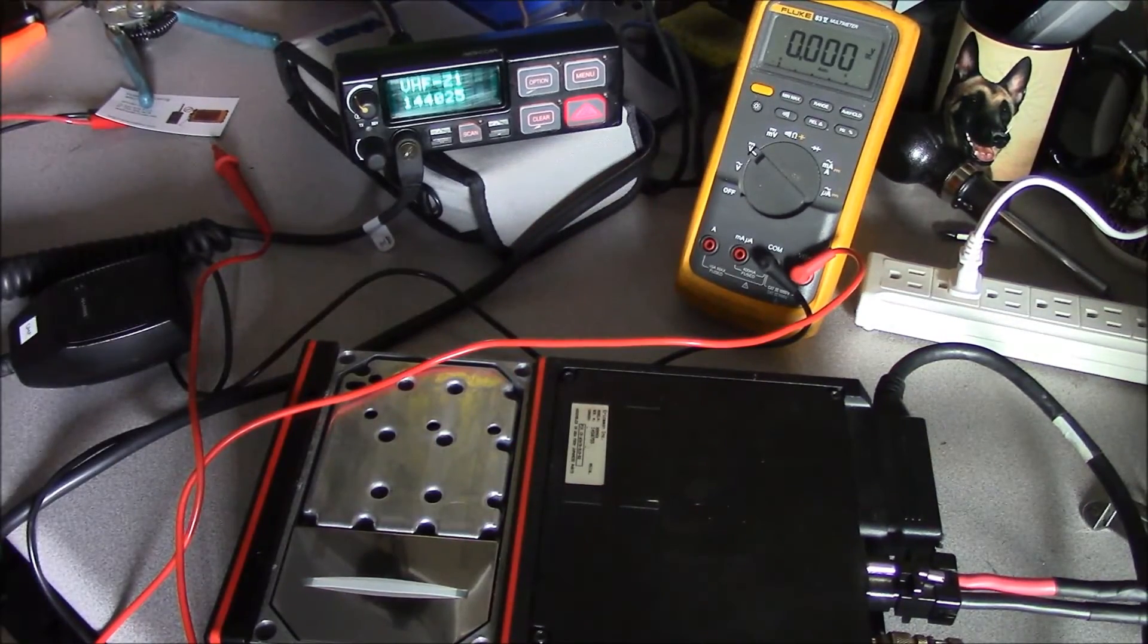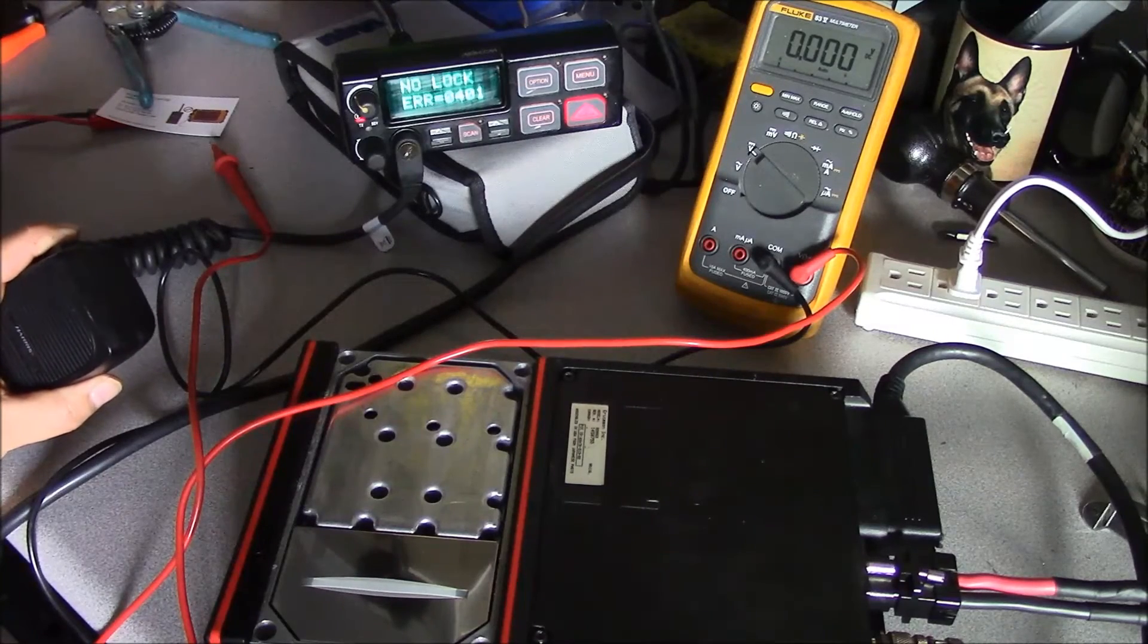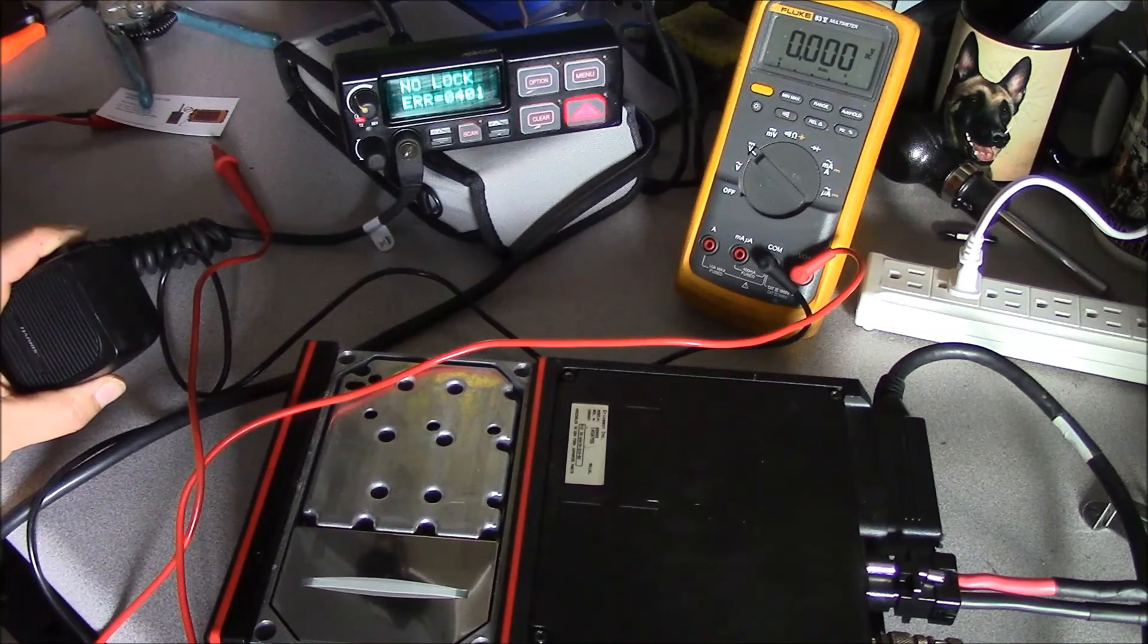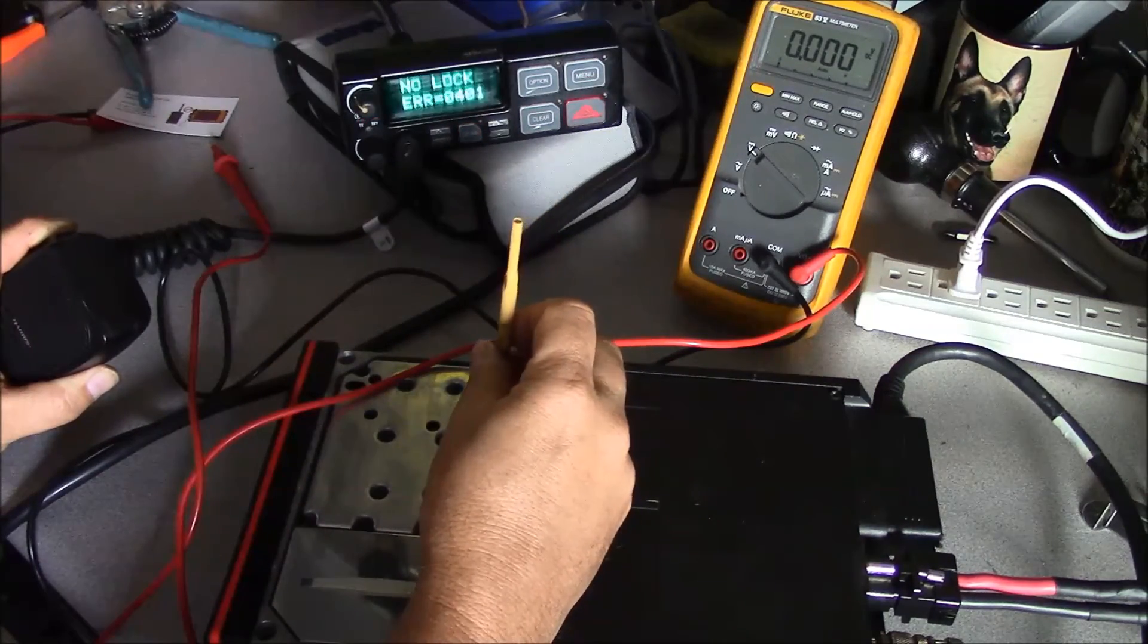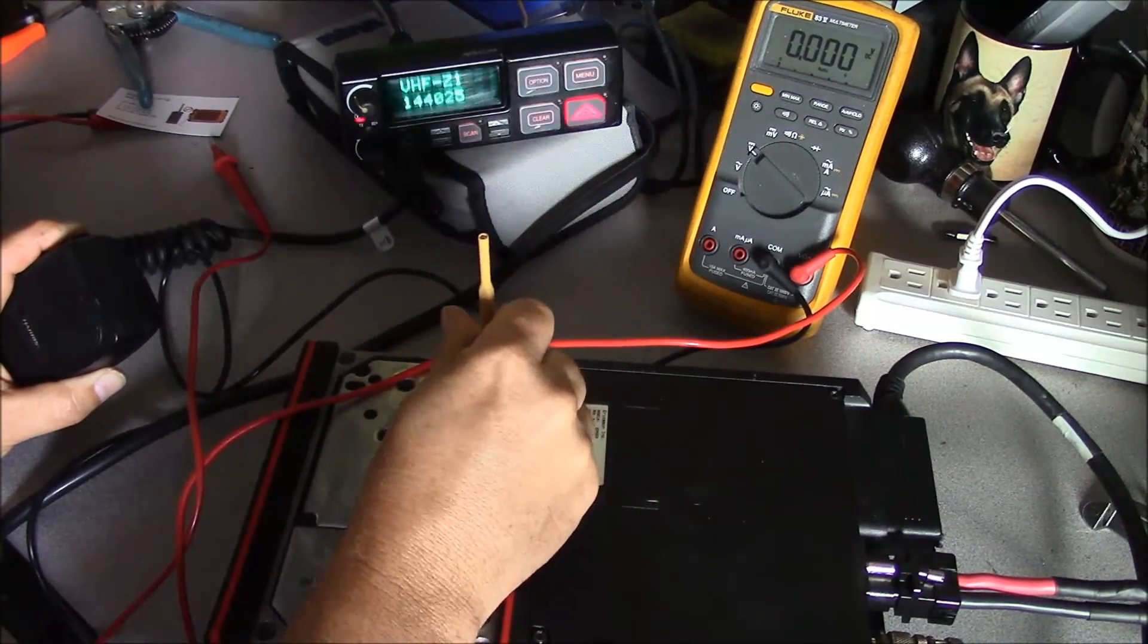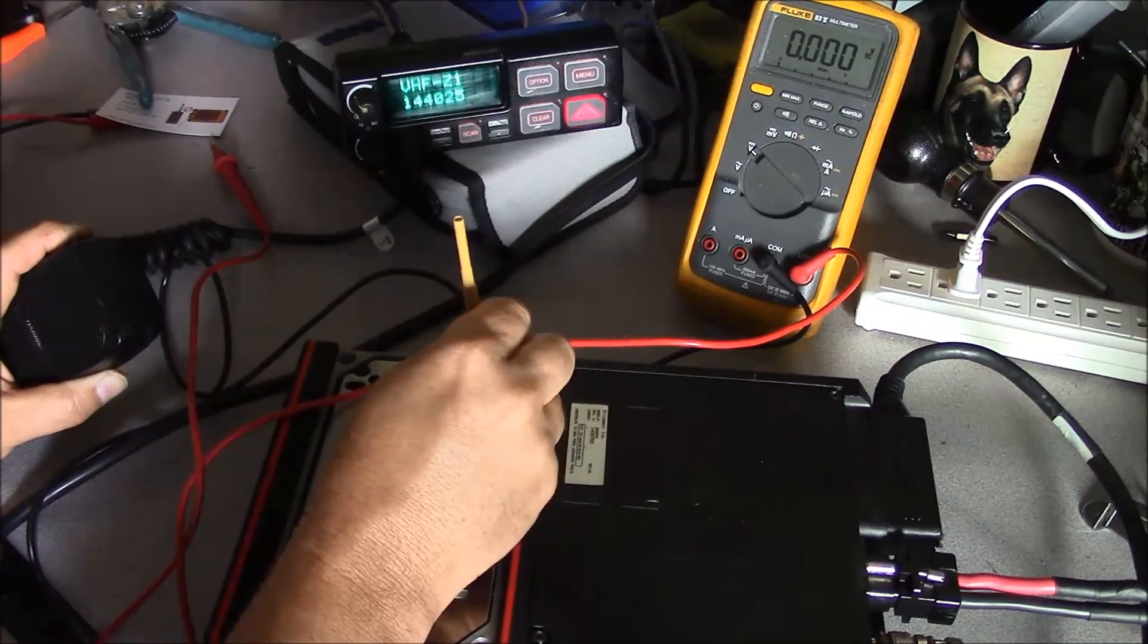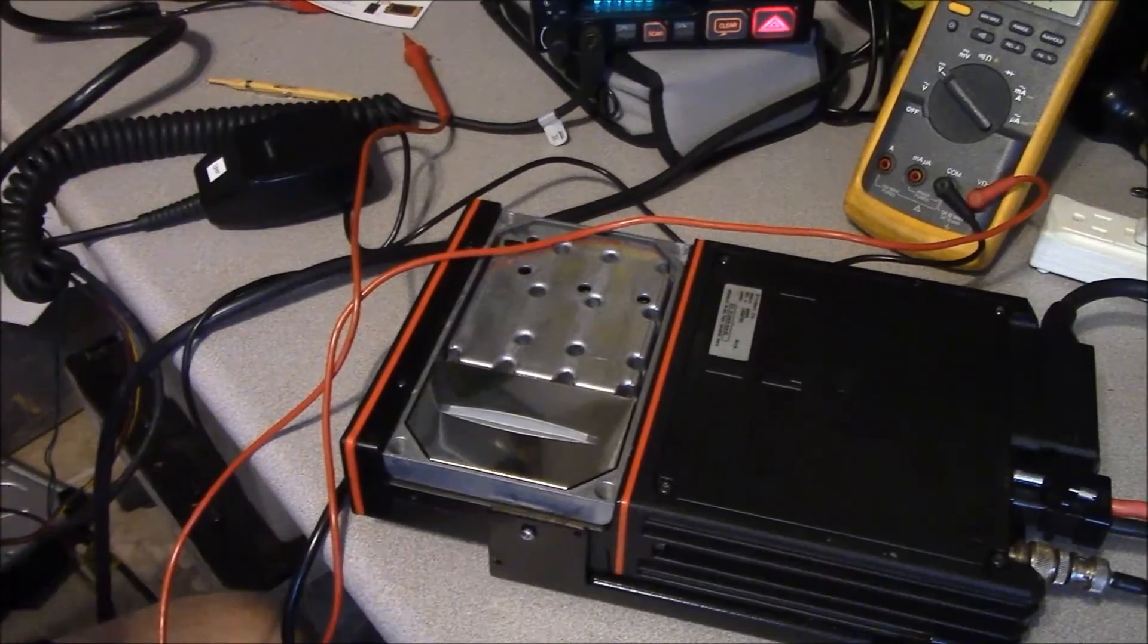Now we'll adjust our transmit VCO. Because as you can see when we transmit into the service monitor, it's doing the same thing as before. So we need to adjust the transmit VCO now. And now you can see we're locked in now.